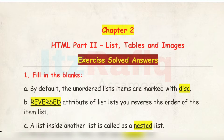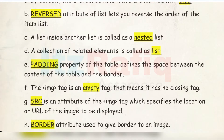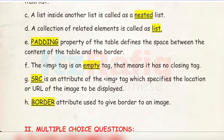B) This attribute of list lets you reverse the order of the item list — it is the 'reversed' attribute of the ordered list. C) A list inside another list is called a nested list. D) A collection of related elements is called a list.